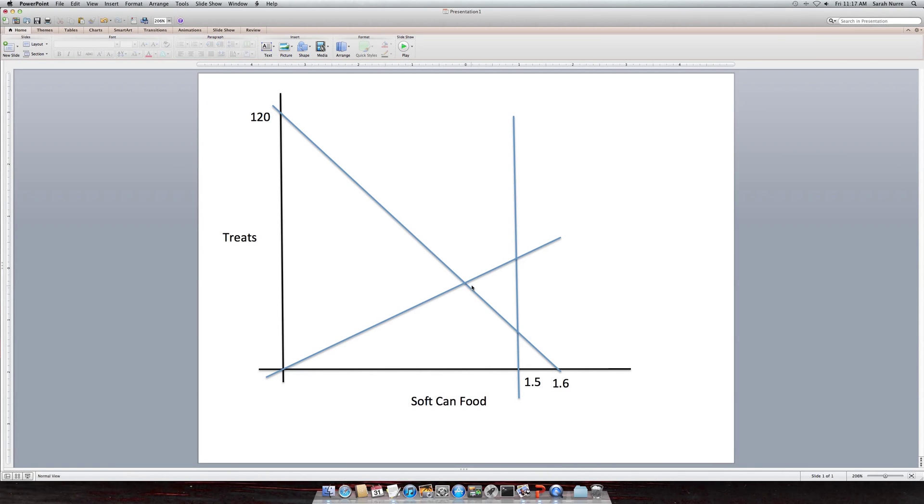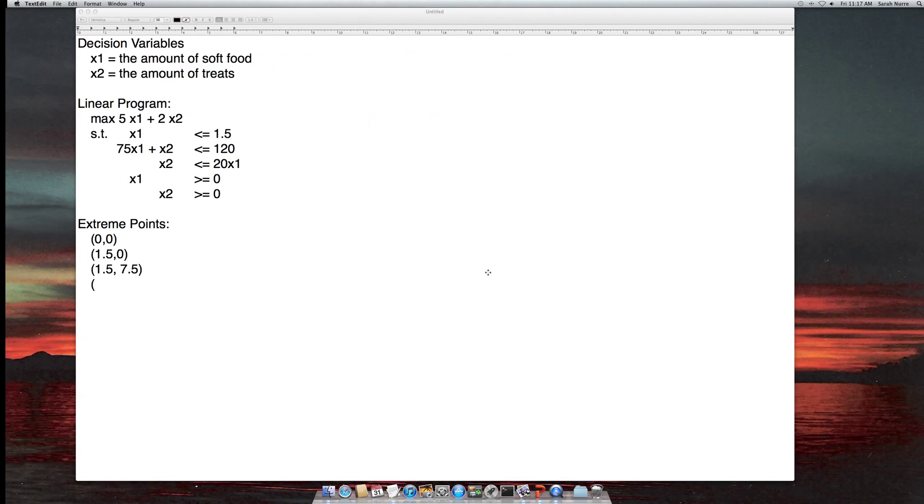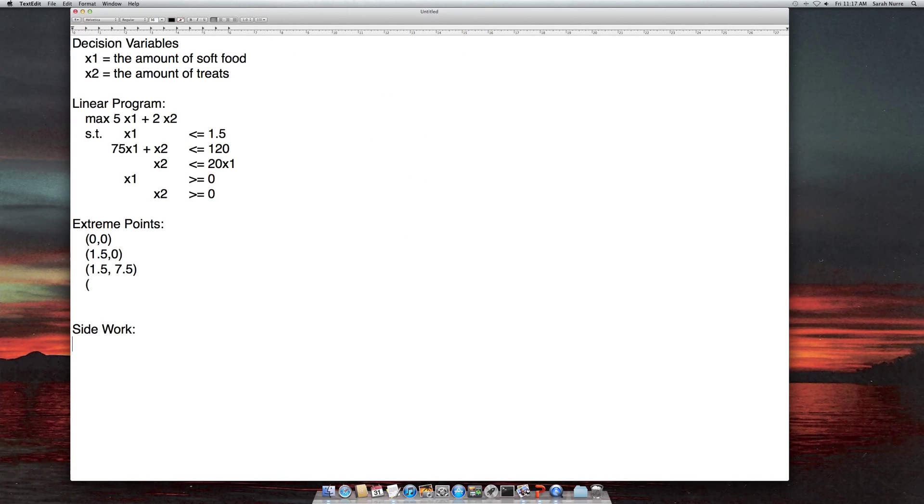Last extreme point here I don't know what either x1 or x2 is. So I have to solve the system of equations where this line equals this line. So I'm going to go down here and do some side work. And I'm going to set this equation equal to zero, this equation equal to zero, and then those two equal to each other. So essentially what I'm doing is 75x1 plus x2 minus 120 equal to negative 20x1 plus x2. And so with this we can see that there's x2 on both sides, so I'm just going to delete them, cross them out. Then I'm going to essentially just move the x1s all to the same side and the values to the other side.